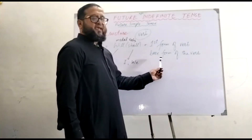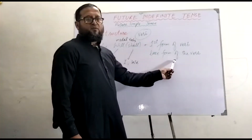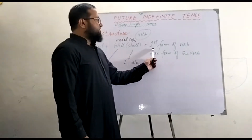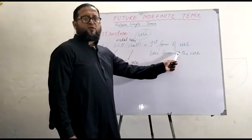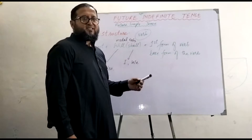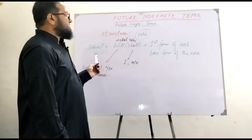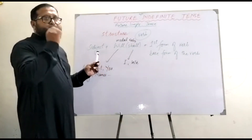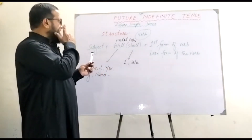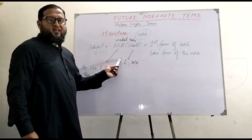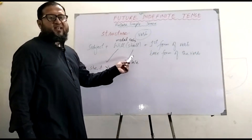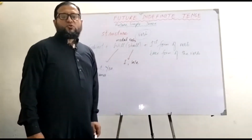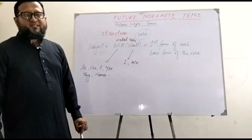Next, we see the base form of the verb. In future indefinite tense, the first form of the verb will be used. So the simple structure of future indefinite tense is: subject + will/shall + base form of the verb. It's easy for your understanding.